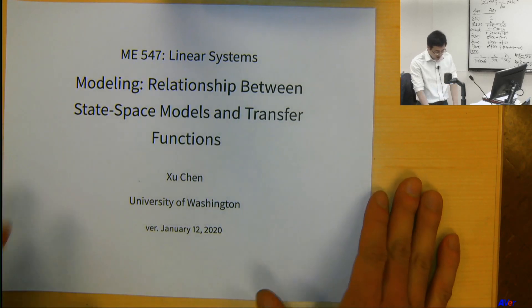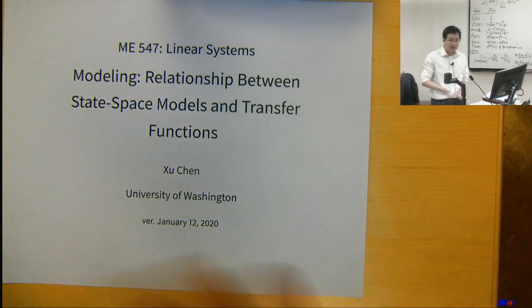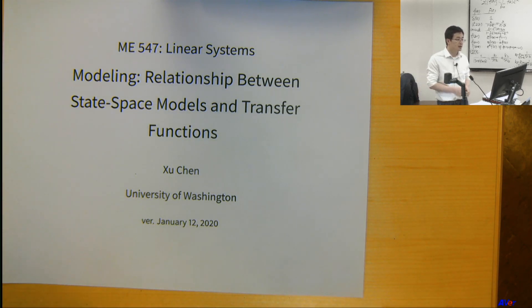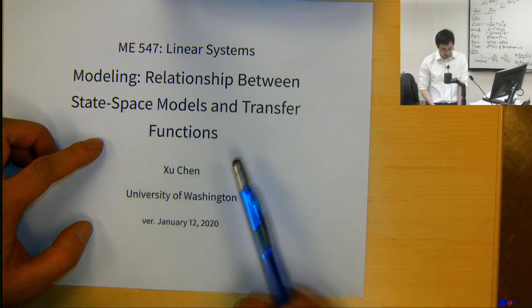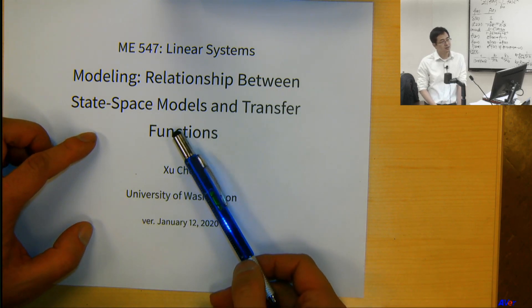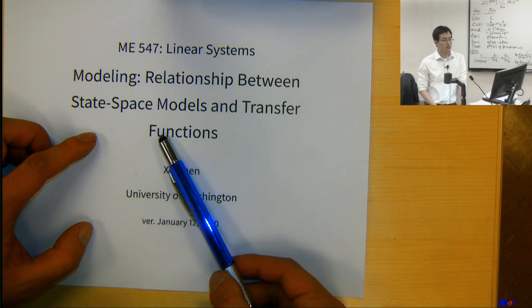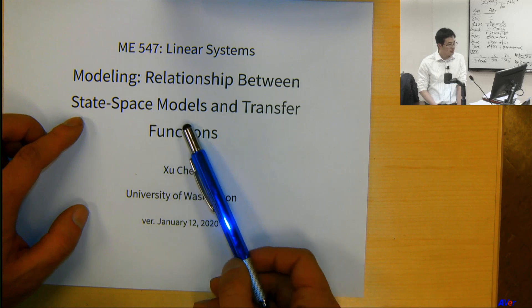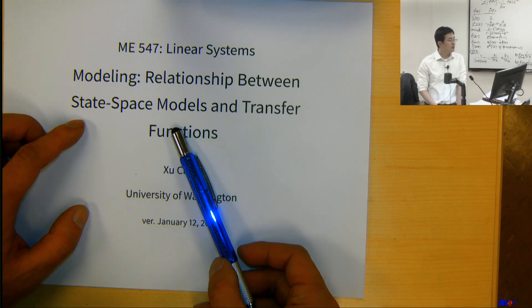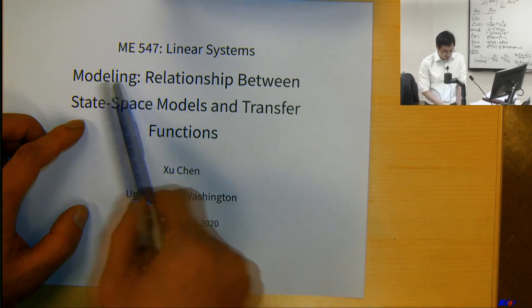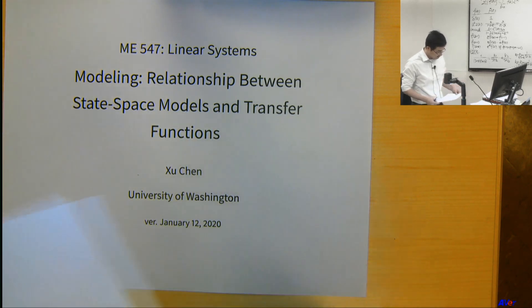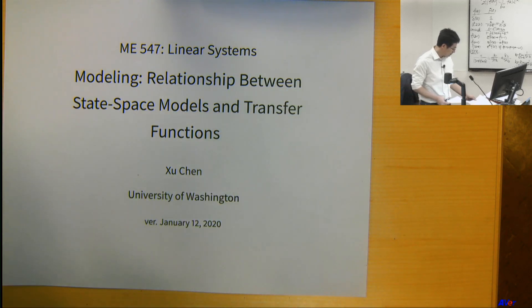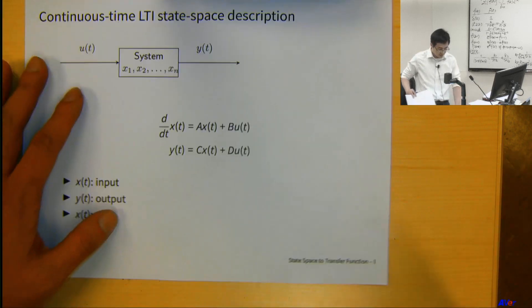We have talked about transfer functions and now we are introducing state-space models. It's very easy to go from one way to another. It's easy to go from state-space to transfer function. What we'll talk about next time is the reverse, which is not as trivial. In a way, this is saying that the state-space model is actually containing more information than the transfer function. You can go from one side to another easily, but backwards is more difficult.